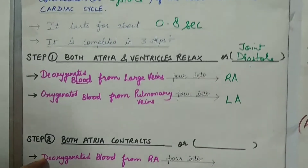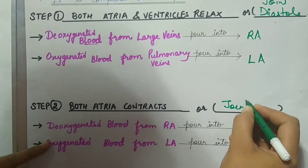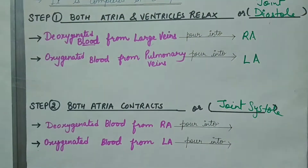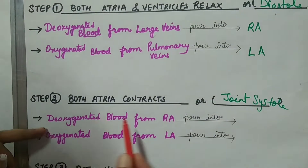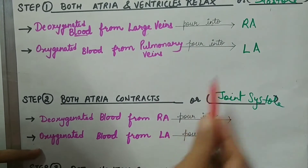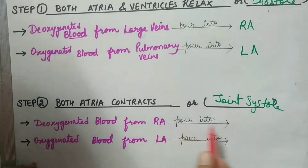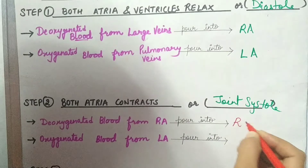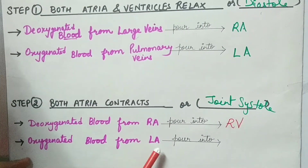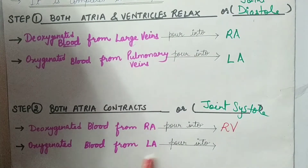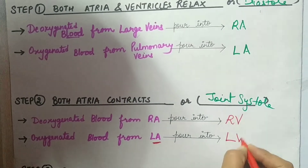Step two is when both atria contract — contraction is also called systole, so this is the joint systolic or atrial systolic phase. In this phase, deoxygenated blood from the right auricle pours into the right ventricle. Oxygenated blood present in the left auricle also contracts, pouring its blood into the left ventricle.